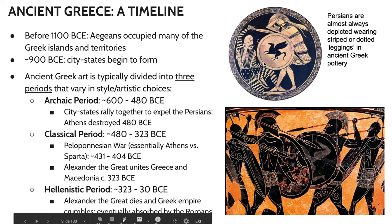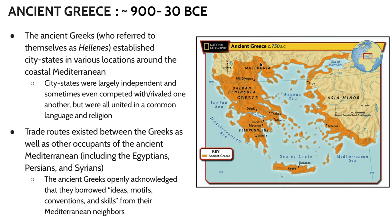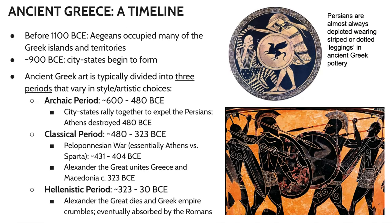These two pieces represent a very common theme in ancient Greek art, and that is warfare. Warfare is also a very common theme in ancient Greek literature. You've probably read or been exposed to the Iliad and the Odyssey by Homer. In this image, we see a Greek attacking a Persian. Typically, Persians are represented as having these striped leggings and arm covers.